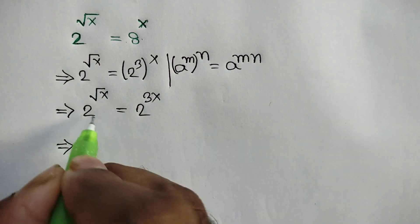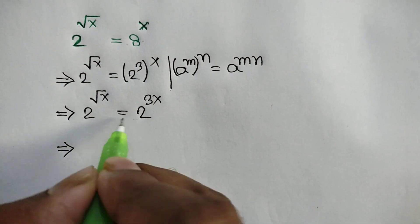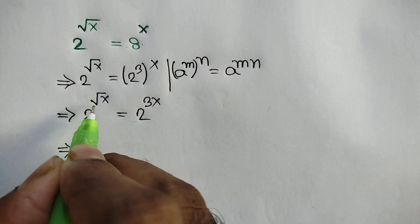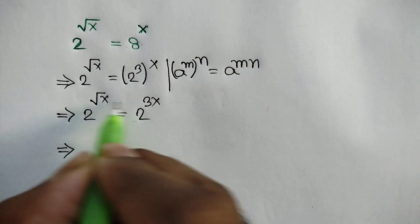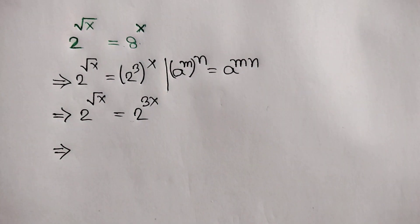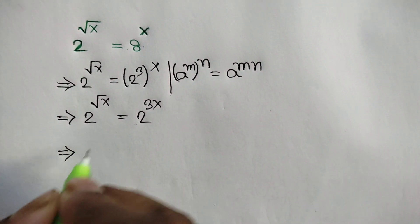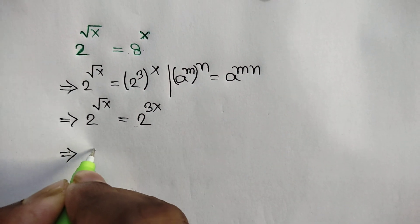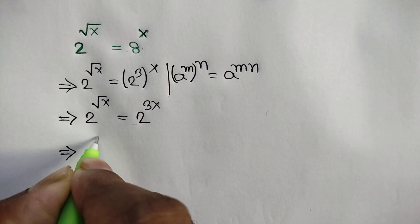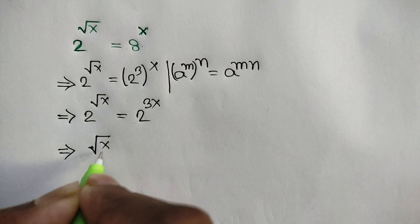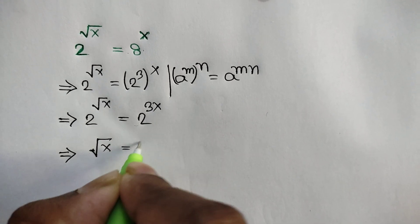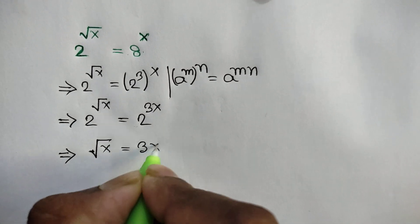Now, here we have the same base with different powers, so we can equate the exponents and write: square root of x is equal to 3x.